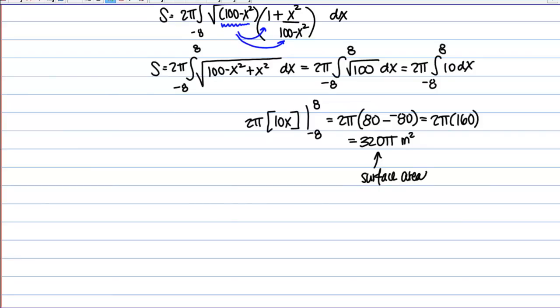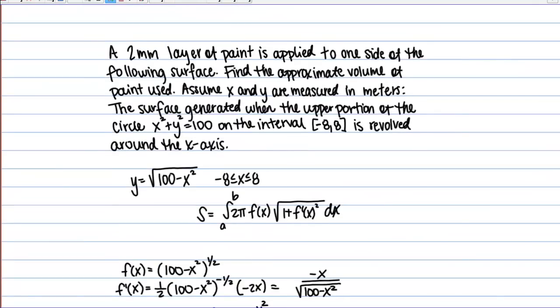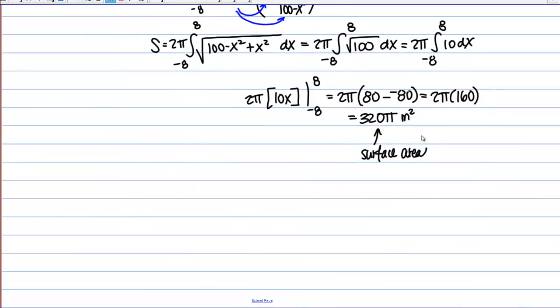Okay, but now what we're ultimately interested in finding, of course, is the volume of the paint. Let's go back up here, the volume of the layer of paint that's applied to this surface. So then what we're actually going to do is we're going to take this surface area and we're just going to multiply it by the thickness of the paint and that's going to give us the additional dimension we need to get to the volume.